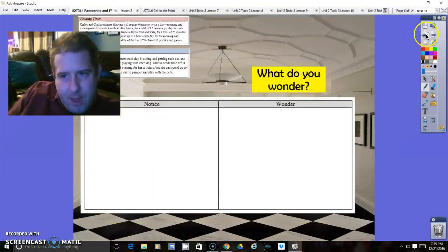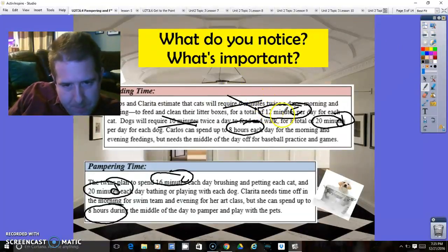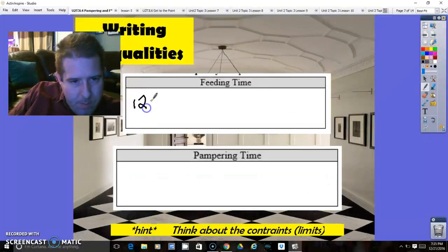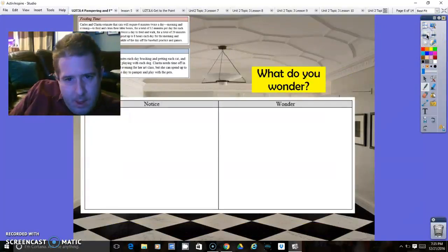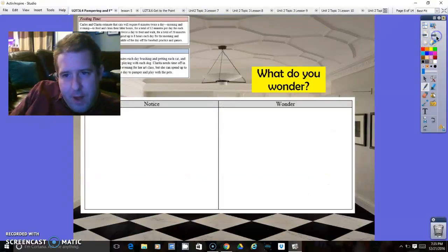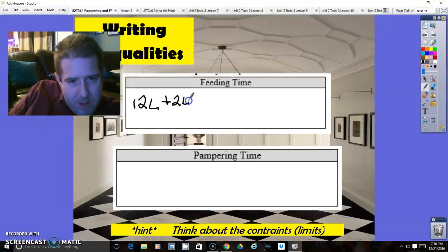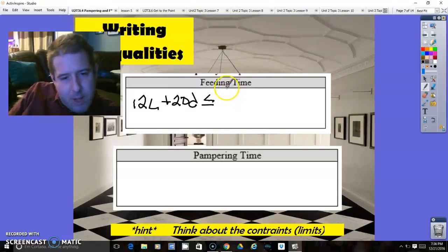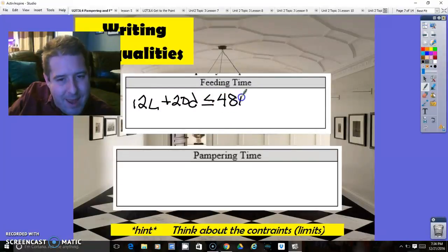All right, so feeding time. 12 minutes a day per cat feeding time. And it's 20 minutes per dog for 8 hours. So plus 20 minutes per dog has to be less than or equal to, so they don't have to spend all 8 hours. Now here's the tricky part. So it's 8 hours multiplied by 60 minutes per hour means that's 480 minutes per day.